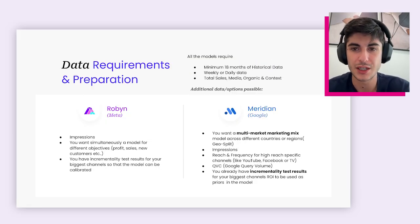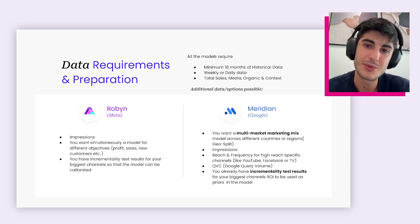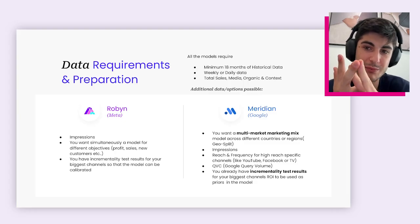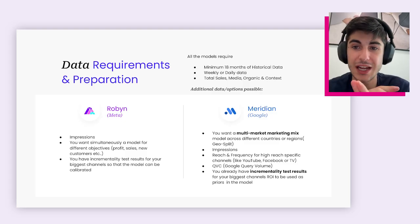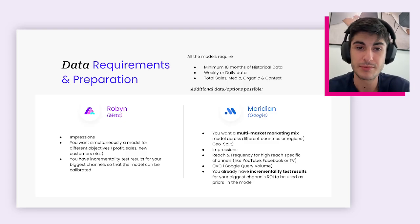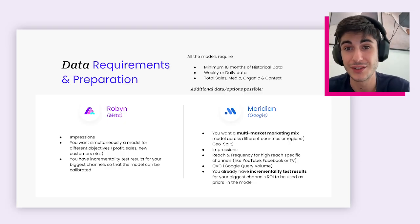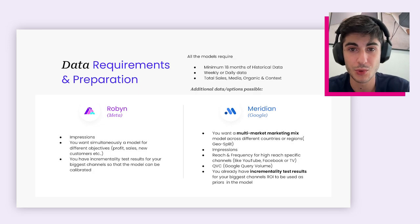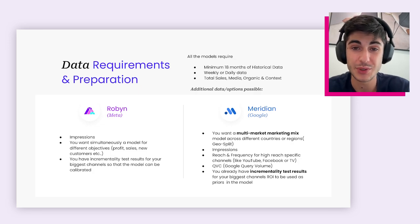In terms of data preparation — probably the most important part of this process and the main difference — they both require at least 18 months of data at a weekly or daily level: total sales, spend, media, organic channels like emails and SMS, and context variables such as promotions, discounts, weather, or interest rates. On top of that, there are non-required data you can add in Robyn: impressions linked to spend, and incrementality test results over time. Every time you retrain the model, you can add incrementality test results to calibrate it. This is really important to do, because otherwise the model can show you a wrong picture of what is actually happening in your marketing mix.